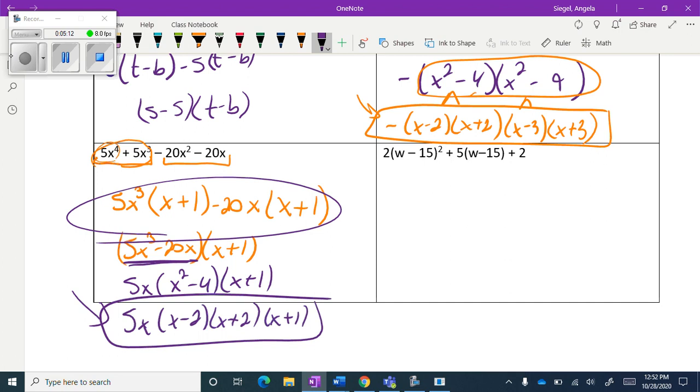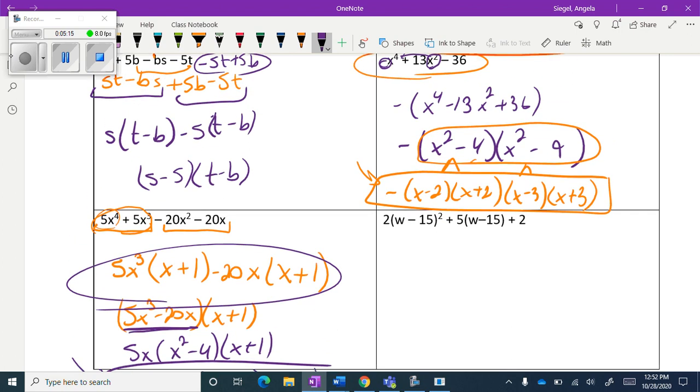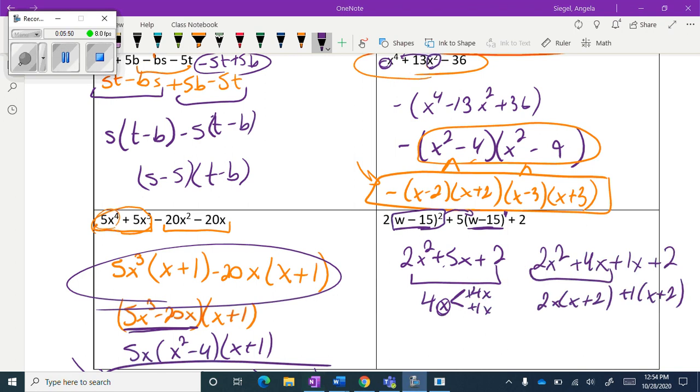This one—notice that this one right here is double this because this is like x to the first power. So I'm still going to think about it as like 2x squared plus 5x plus 2. Let's go ahead and just work with that and do the AC method. So 4x, and I already know it's not going to be an x, it's going to be w minus 15, but we'll kind of take care of that later.